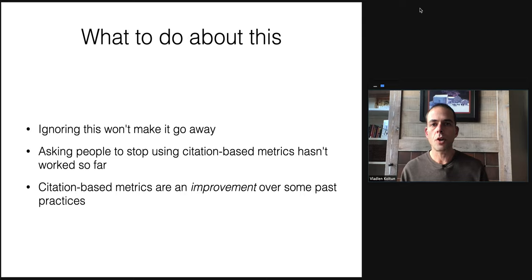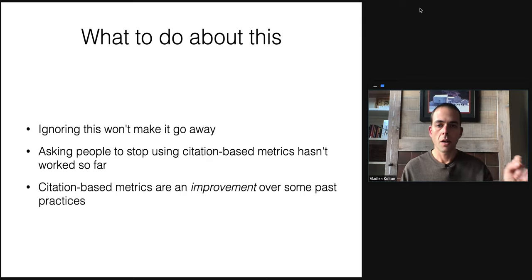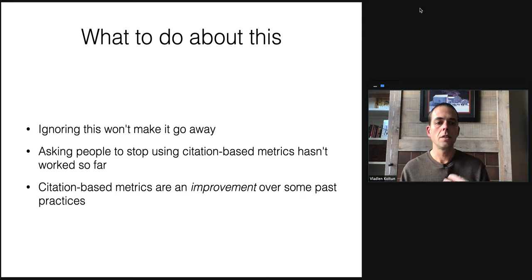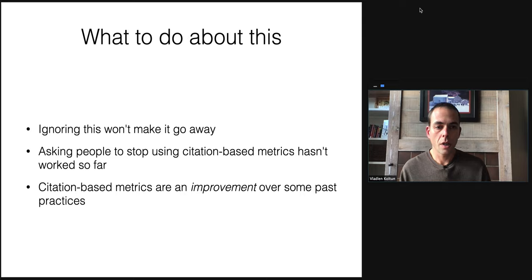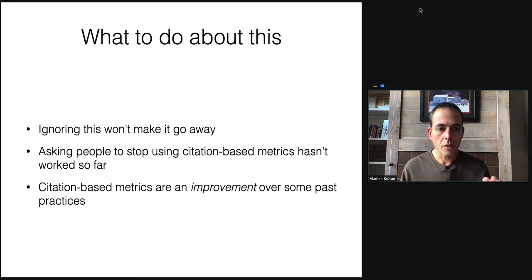Research allocation decisions shape the progress of science. Whether Researcher A gets funded versus Researcher B is actually a consequential decision — it means that Researcher A's agenda will get more resources to make progress. How such decisions are made is something that all of us should care about because it shapes how the research community evolves. Furthermore, citation-based metrics are actually an improvement over how some decisions such as these used to be made in the past.